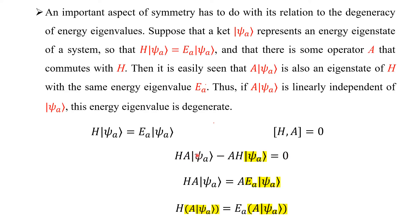From [H, A] = 0 applied to |ψ_a⟩: HA|ψ_a⟩ = AH|ψ_a⟩. Since H|ψ_a⟩ = E_a|ψ_a⟩ and E_a is a number, it can be brought in front: HA|ψ_a⟩ = E_a·A|ψ_a⟩. This shows A|ψ_a⟩ is also an eigenstate of the Hamiltonian with the same eigenvalue E_a — which is what we call degeneracy.